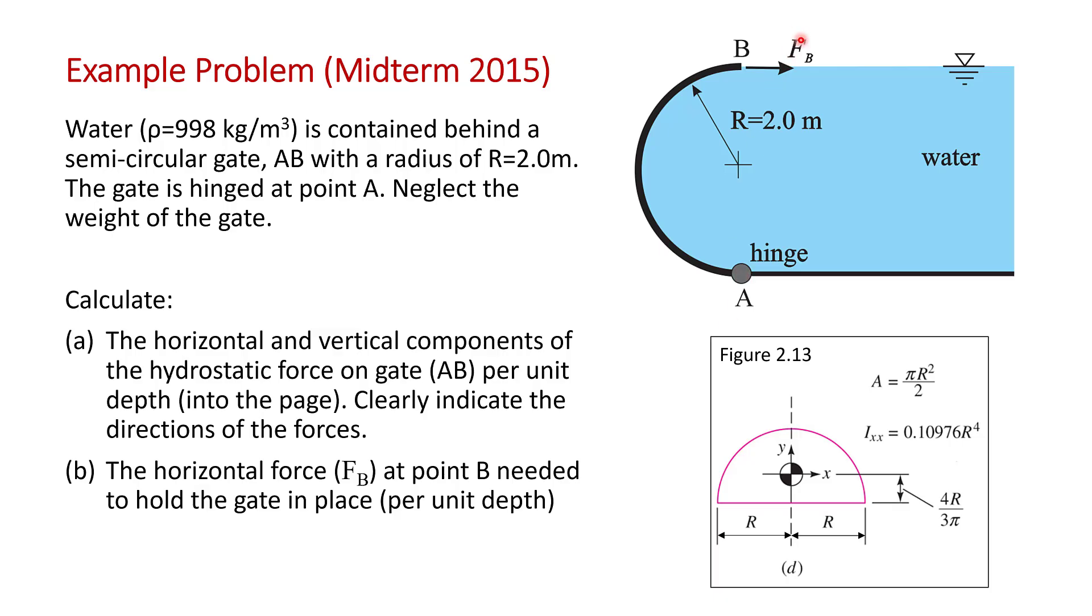In part B, we want to calculate the force applied horizontally at point B to hold this gate in place. On the midterm, you were given figure 2.13, which shows the centroids and second moments of areas of surfaces, so you have that at your disposal.